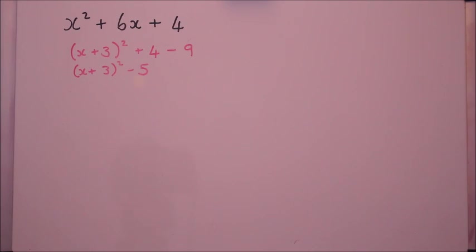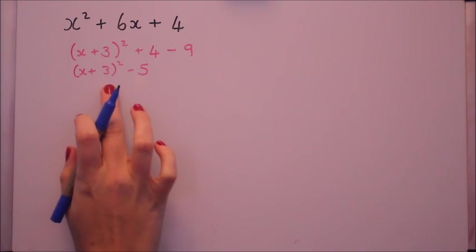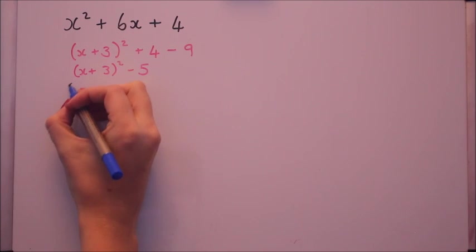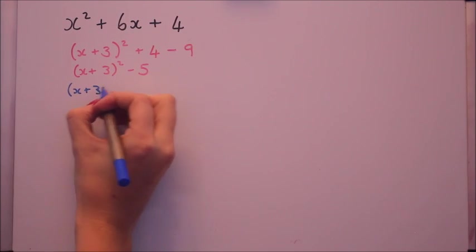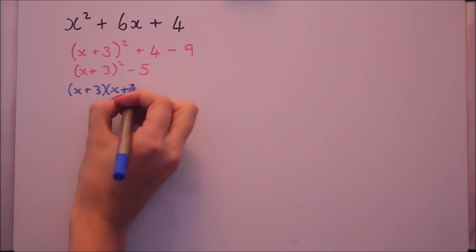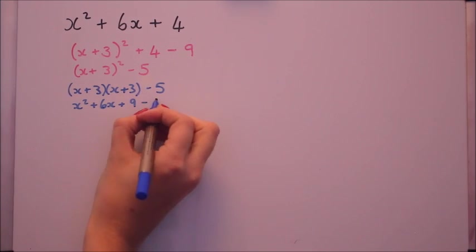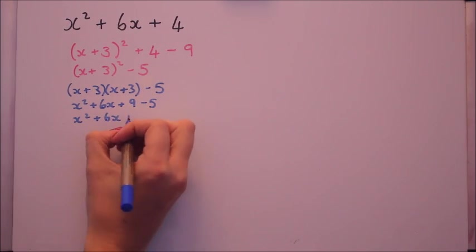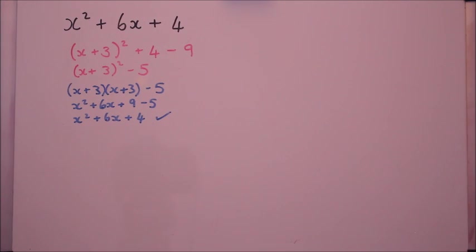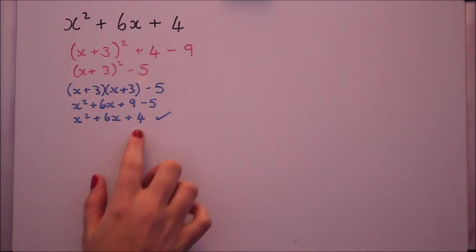Let's just really quickly convince ourselves that this is right. This will by the way simplify to x plus three squared minus five. Let's just convince ourselves that's the same as what we started with by multiplying out the double brackets. Yes, that's what we started with. So if you're not 100% sure or if you're in an exam, it's a nice way of quickly checking that you've got that completed square version right.